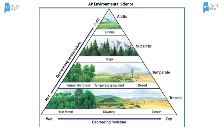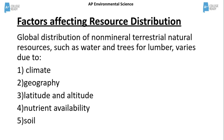There are several factors that affect where resources such as plants and animals are distributed. These include climate, geography, latitude and altitude, nutrient availability, and soil type.